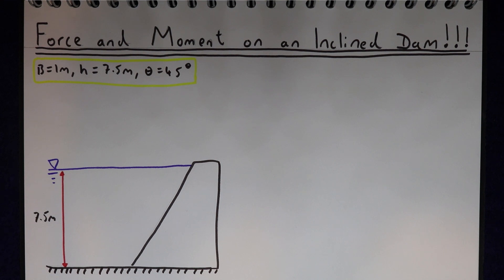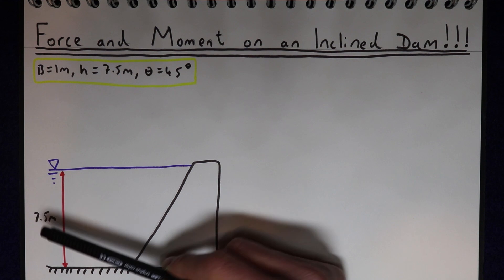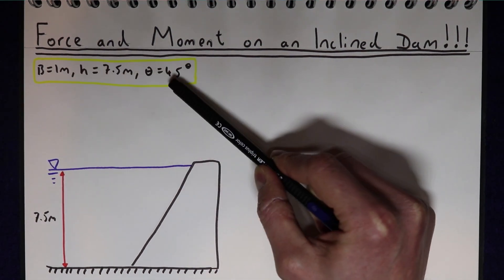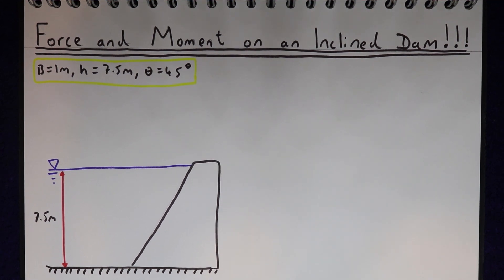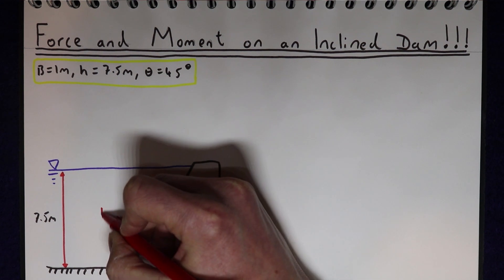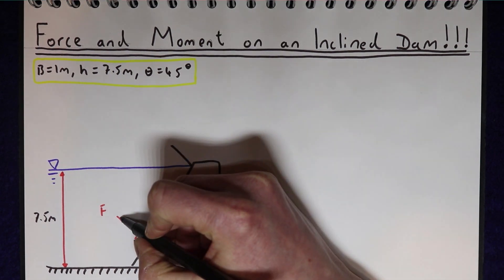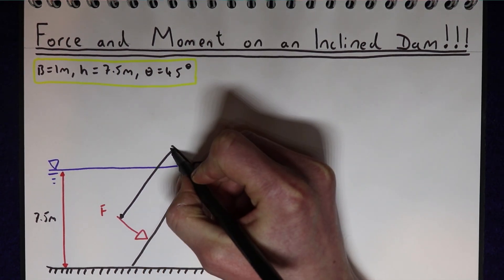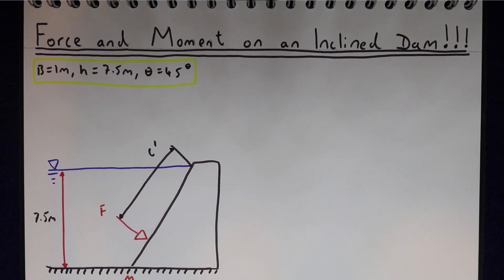In this problem we're looking at the force and moment on an inclined dam. The dam is retaining water to a depth of 7.5 metres, the width of the dam is 1 metre, and the dam is inclined at an angle of 45 degrees relative to the water surface. We're trying to work out the total force F on the dam, its location L', and the moment at the base M trying to topple the dam.